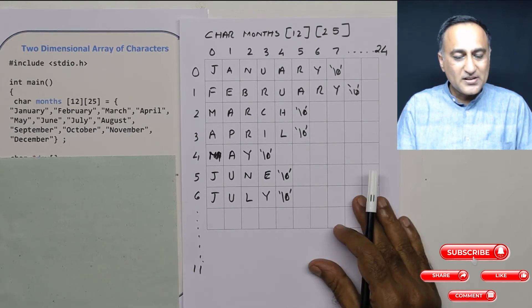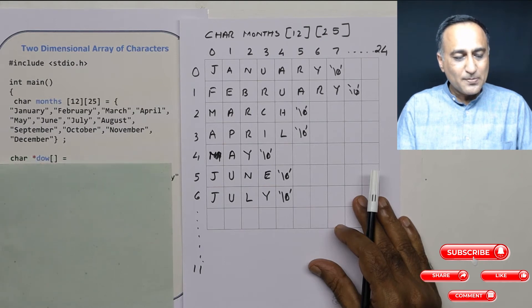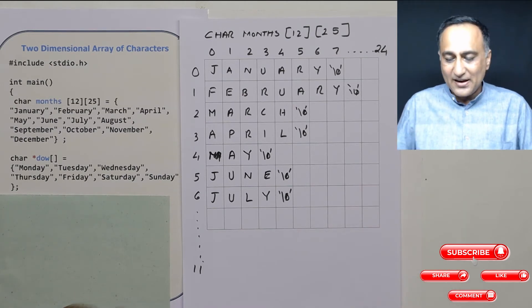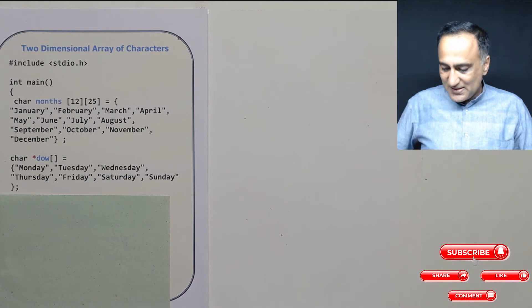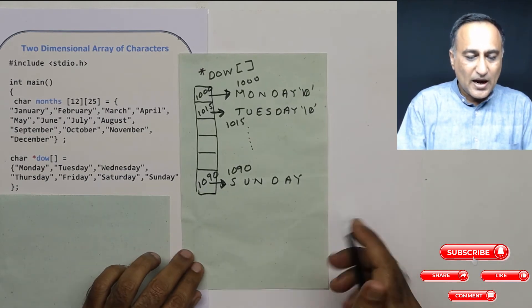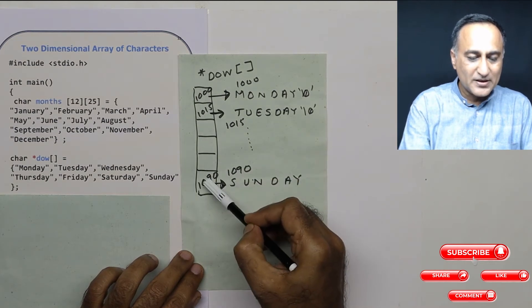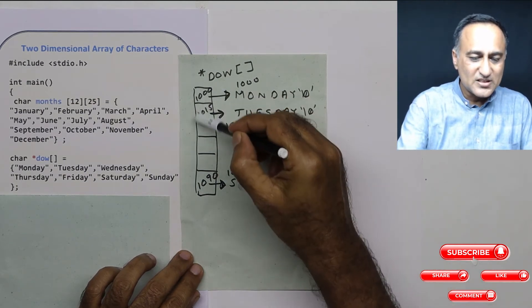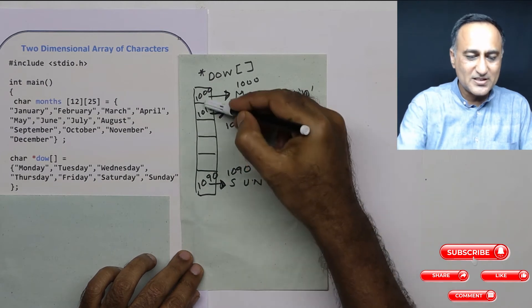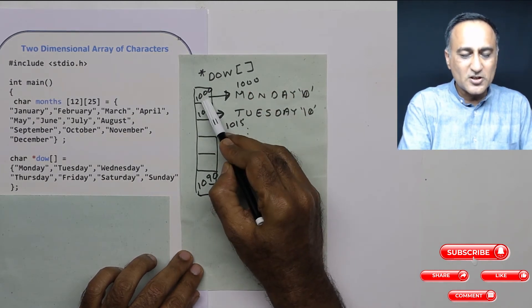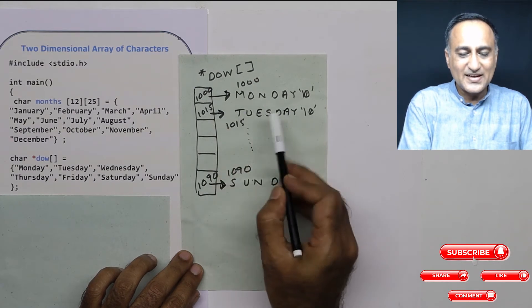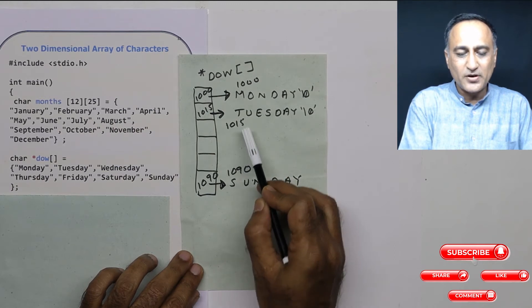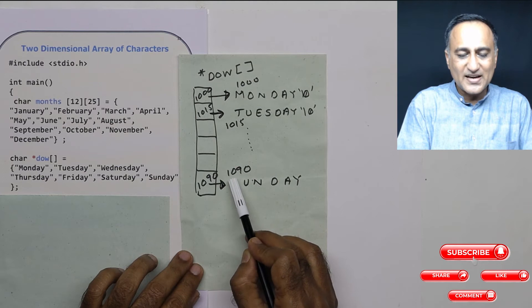In order to avoid this wastage of space, I can simply declare an array of pointers. Suppose I want to store the days of the week — I can declare an array of pointers like this. An array of pointers is simply a normal array that, instead of containing numbers, contains addresses. Let's assume Monday is stored at address 1000, Tuesday starting at address 1015, and Sunday starting at address 1090.